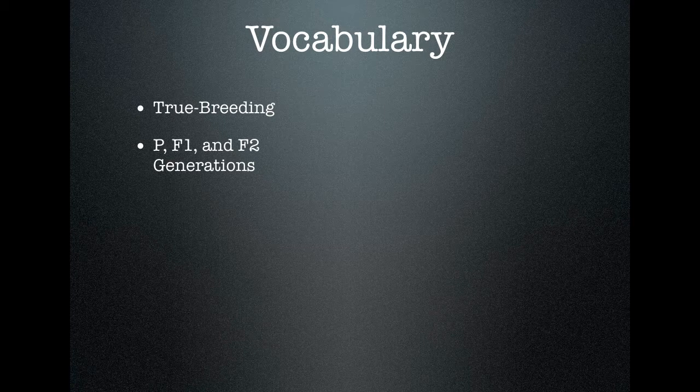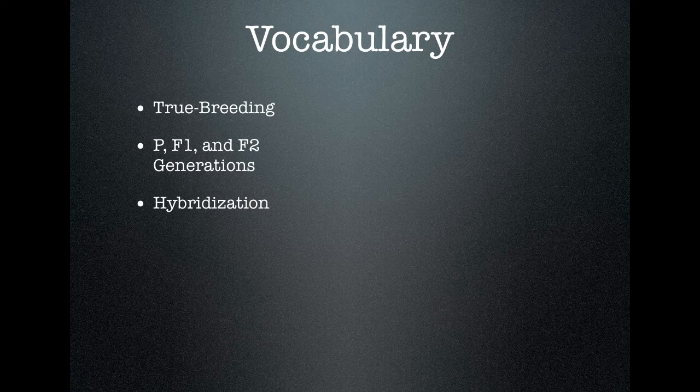When we're doing breeding experiments, there are generation notations that help us keep track of things. P always stands for the parental generation — these are the parents of whatever we are tracking. F1 is the first generation of kids, F2 is the second generation of kids, and you can go well beyond that. The next term you need to know is hybridization — this just means crossing the genes of two things together. You are a hybrid of your parents. Hybridization means mixing of genetic material.